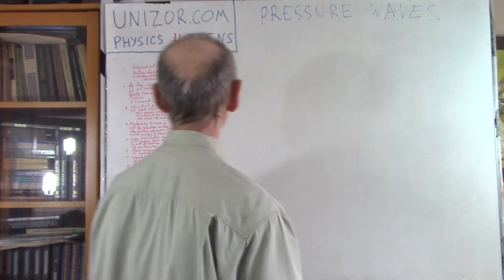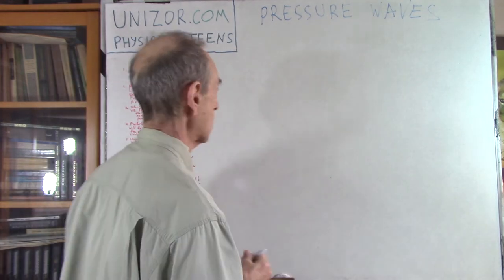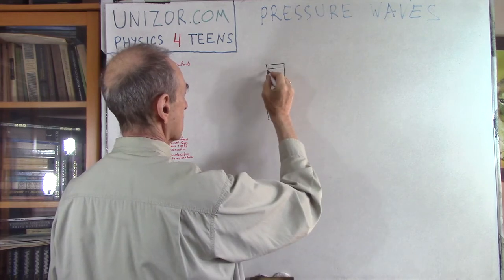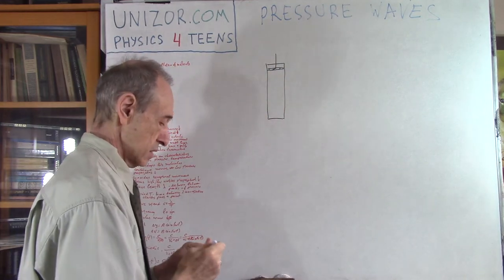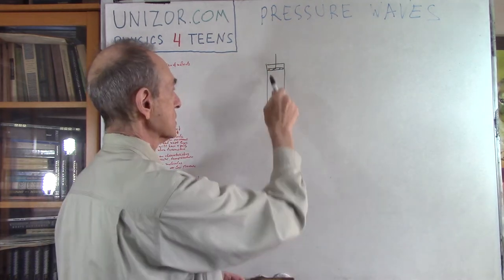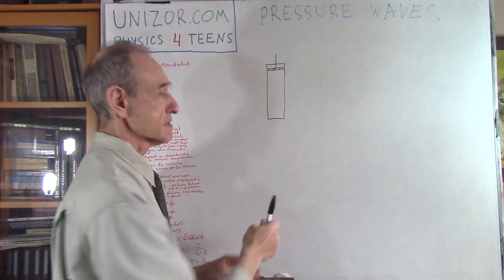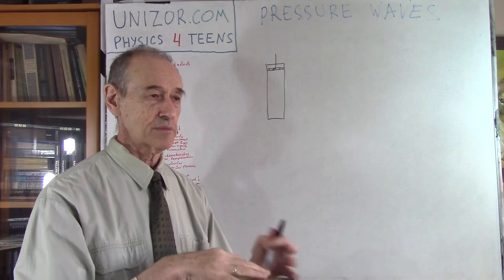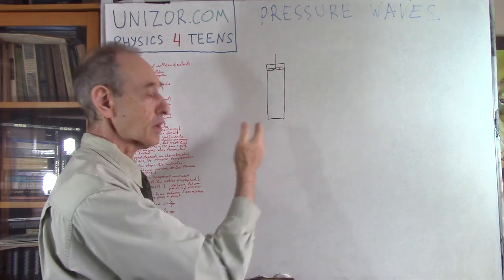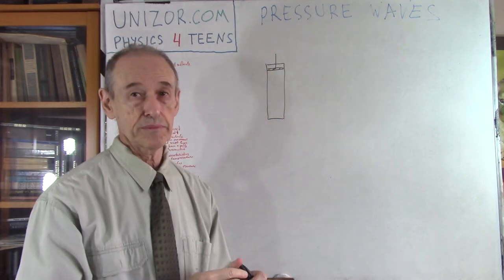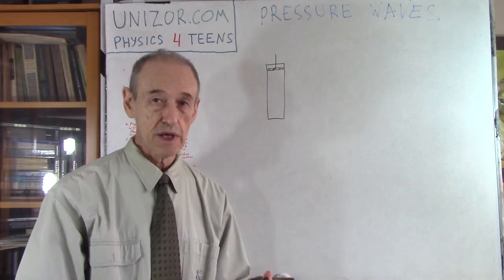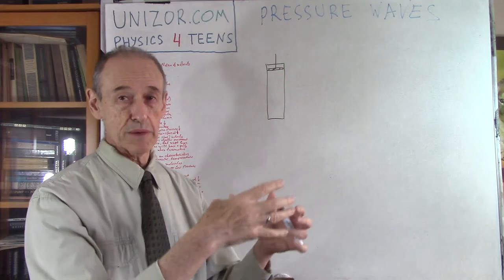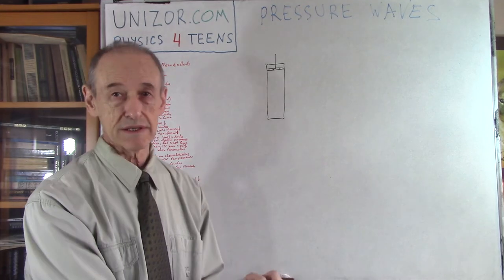I will explain this with a simple example. Consider you have a long cylinder with a piston on top. We are in control of this piston — we can move it up and down. There is air inside the cylinder. The length is sufficiently long so we don't take it into consideration. The diameter is relatively small, because a bigger diameter means distortions from one direction, and I want to concentrate only on the vertical direction in this example.